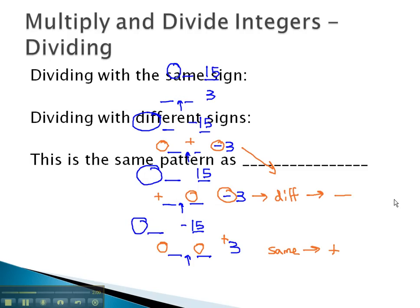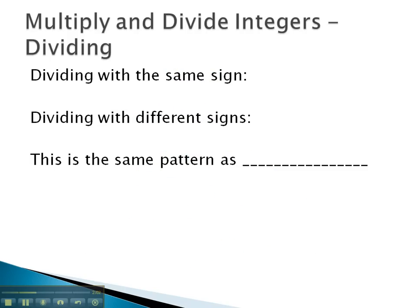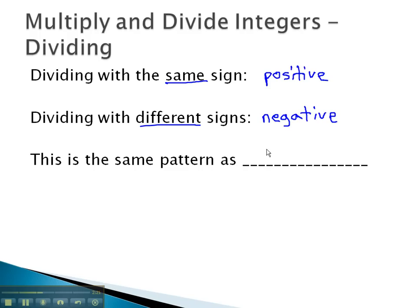In other words, what we're saying is when we're dividing with the same sign, the answer will always be positive. And when we're dividing with different signs, the answer will be negative. Which is a really nice pattern, because it's exactly the same pattern as we saw with multiplication. Same pattern with multiplication and division: if they have the same sign, the answer's positive; if they have different signs, the answer is negative.